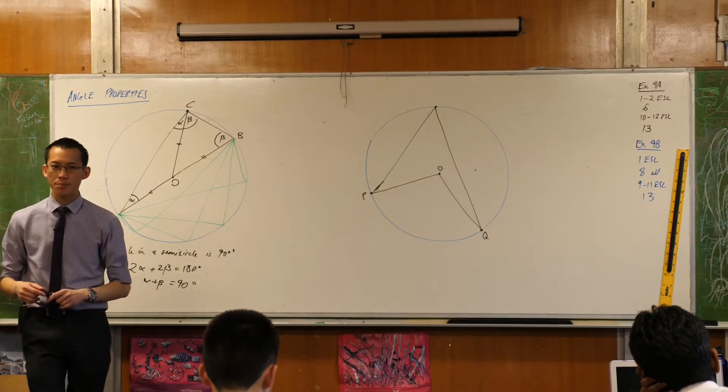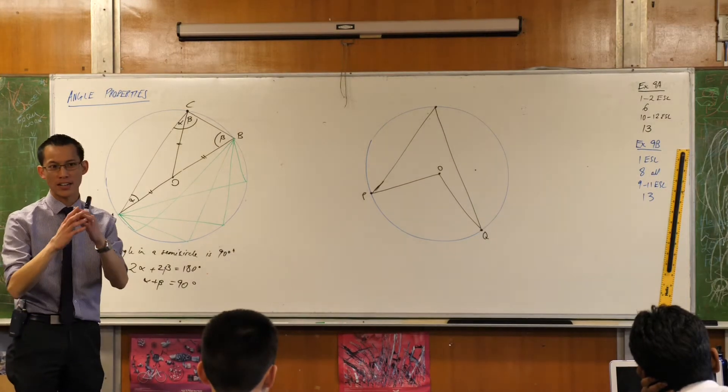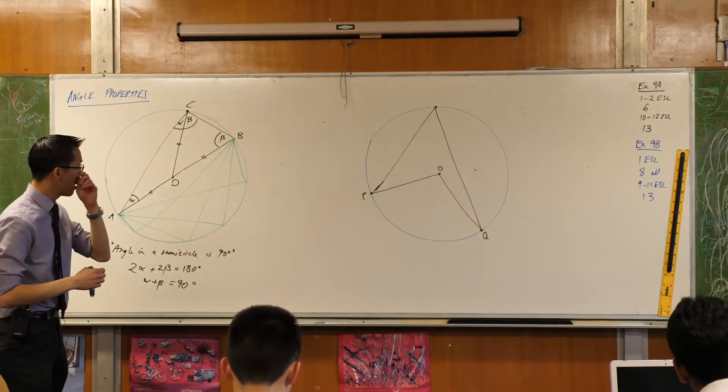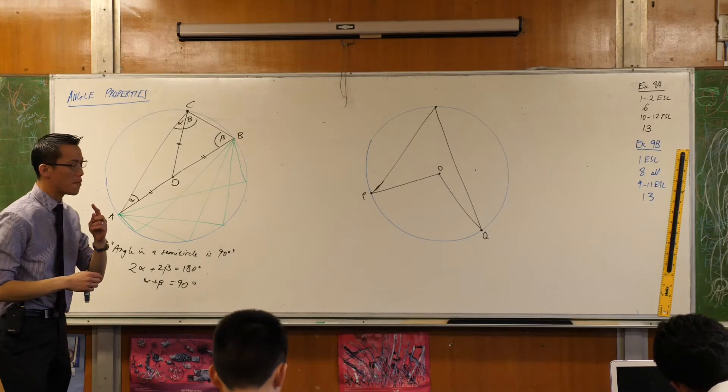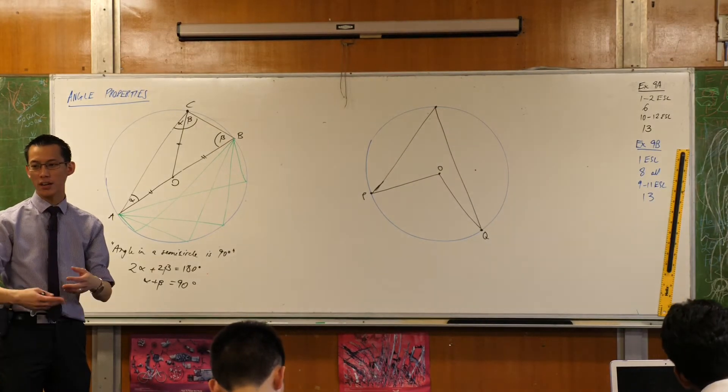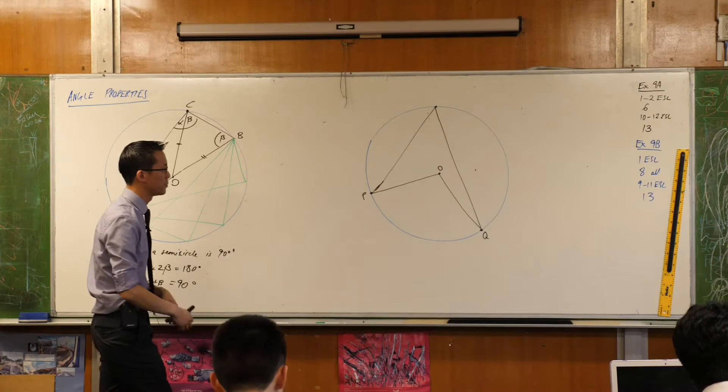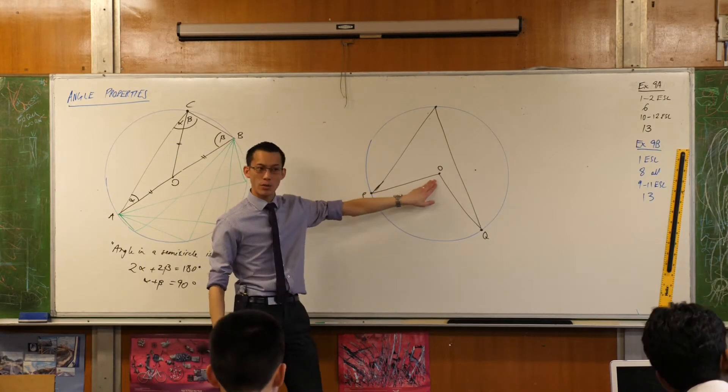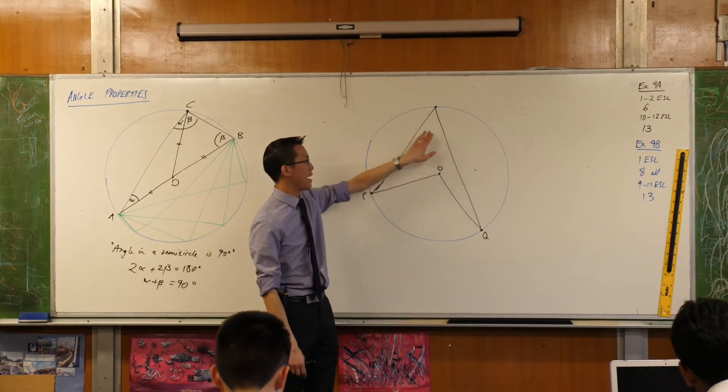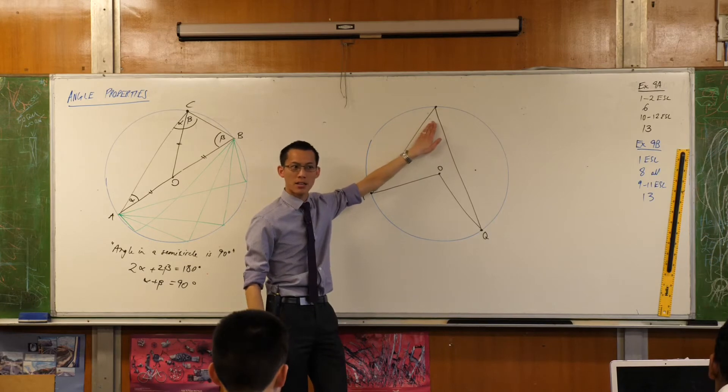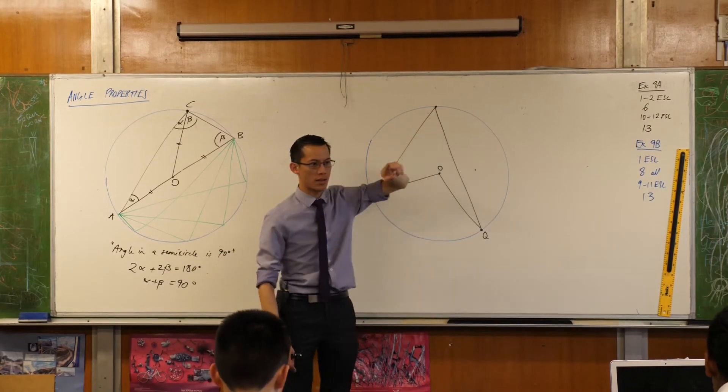Now, you don't have protractors there mostly. Protractors for measuring angles. But what I want you to notice, and you can sort of see it by eye and you can confirm if you do actually have a protractor. I want you to have a look at this angle that we subtended at the center compared to the angle subtended at the circumference. Does anyone know what the relationship between these is?